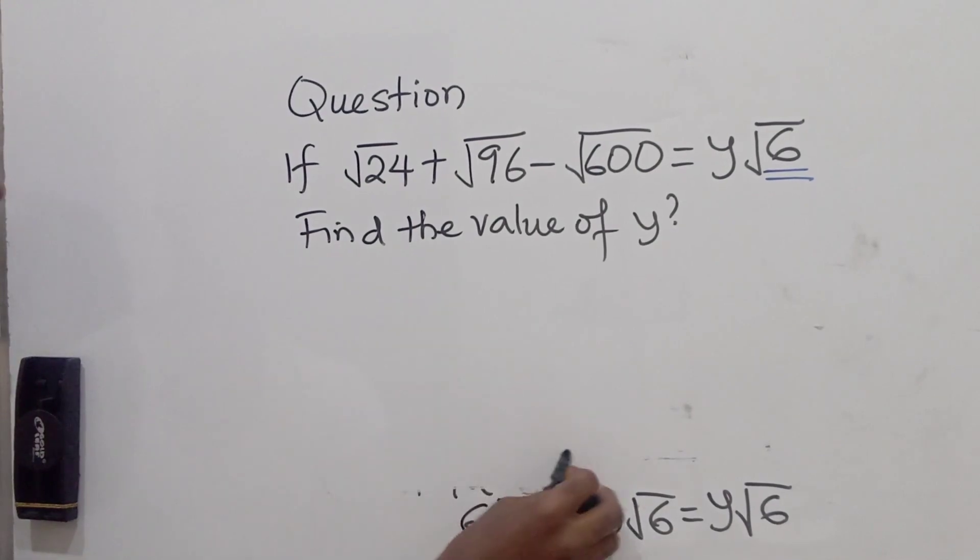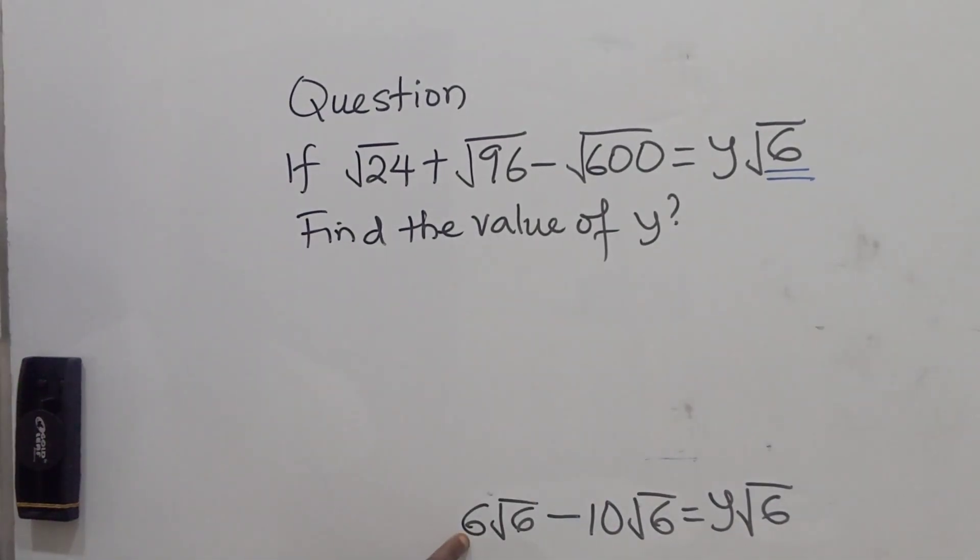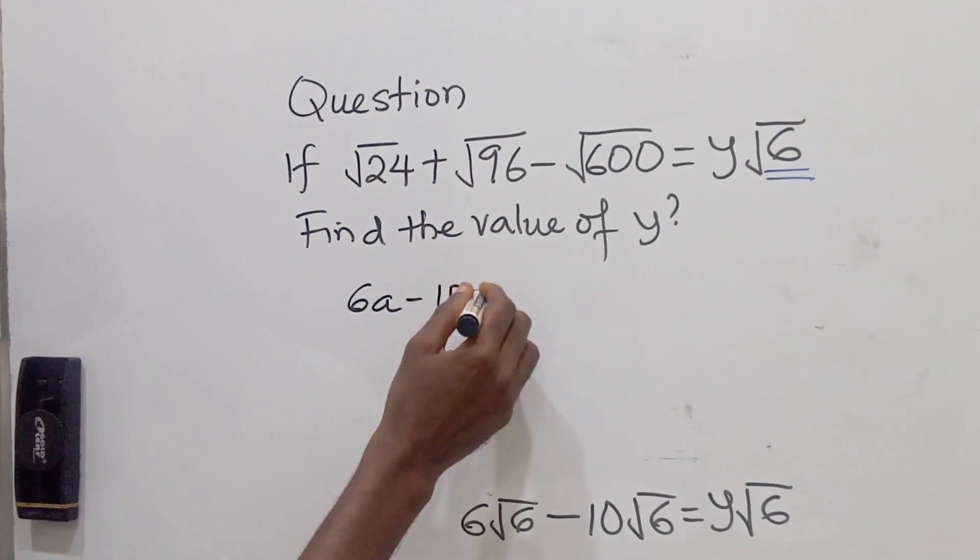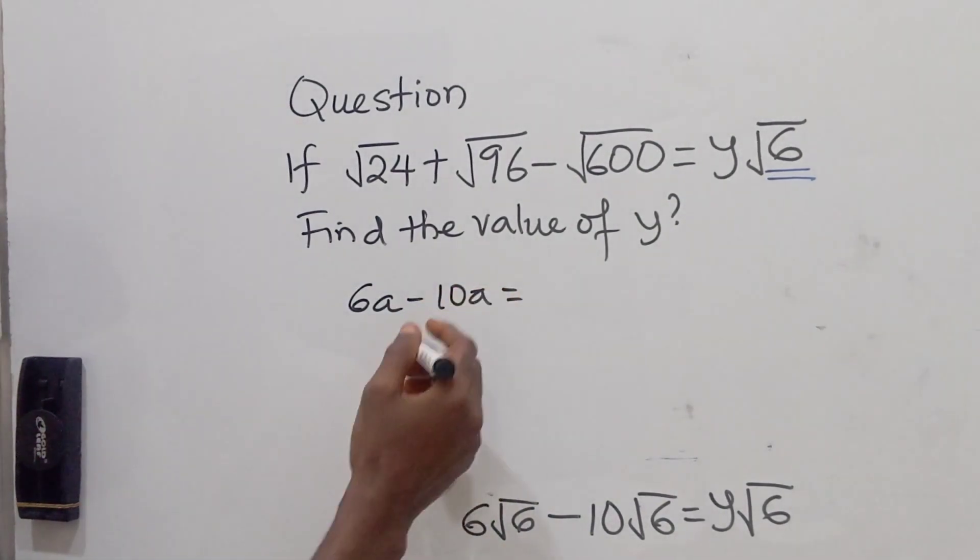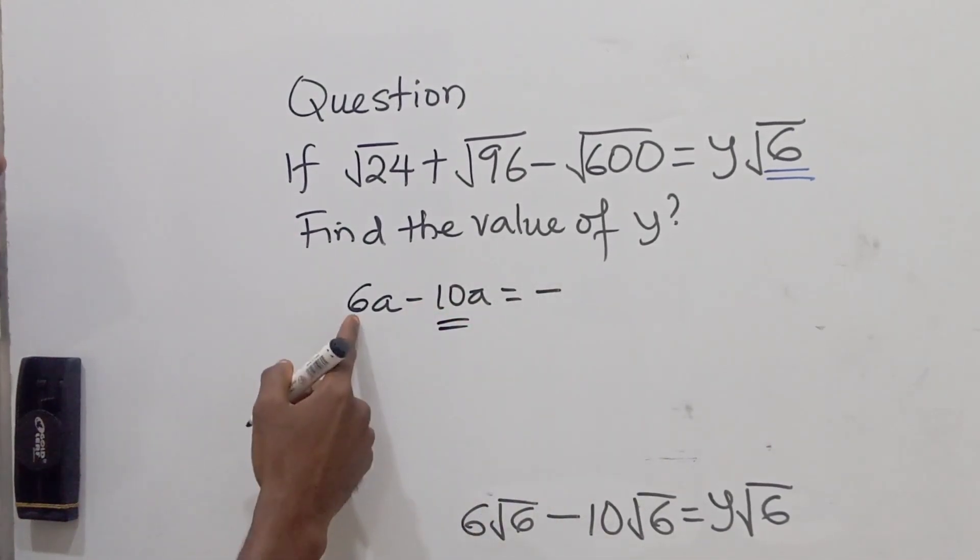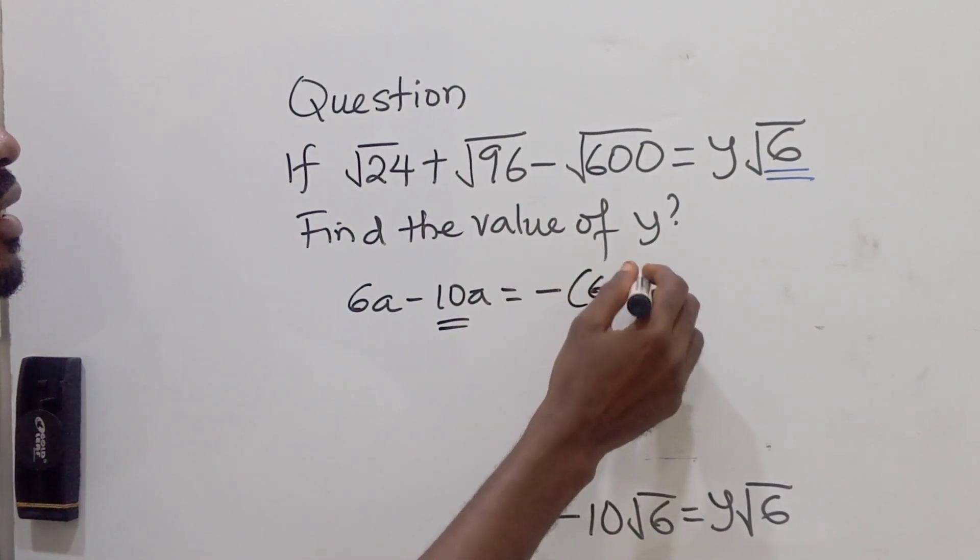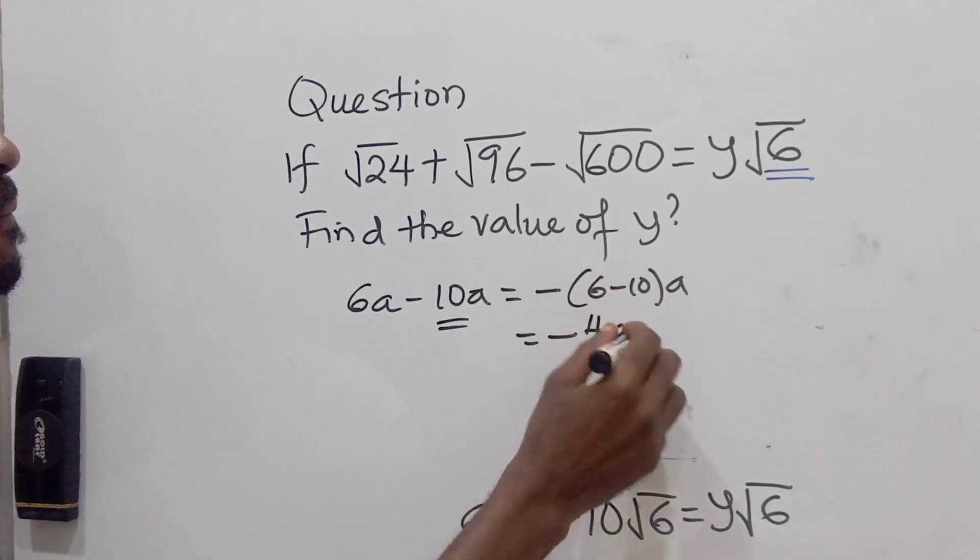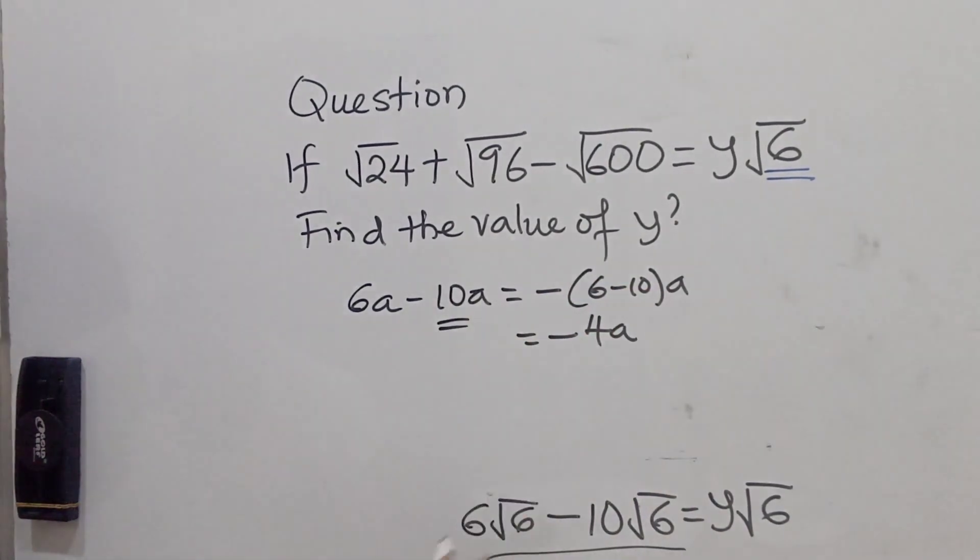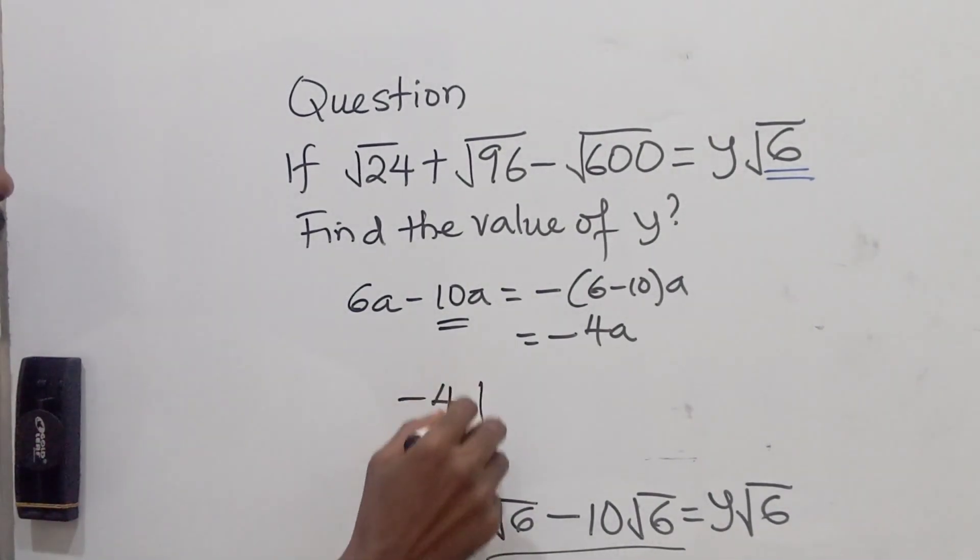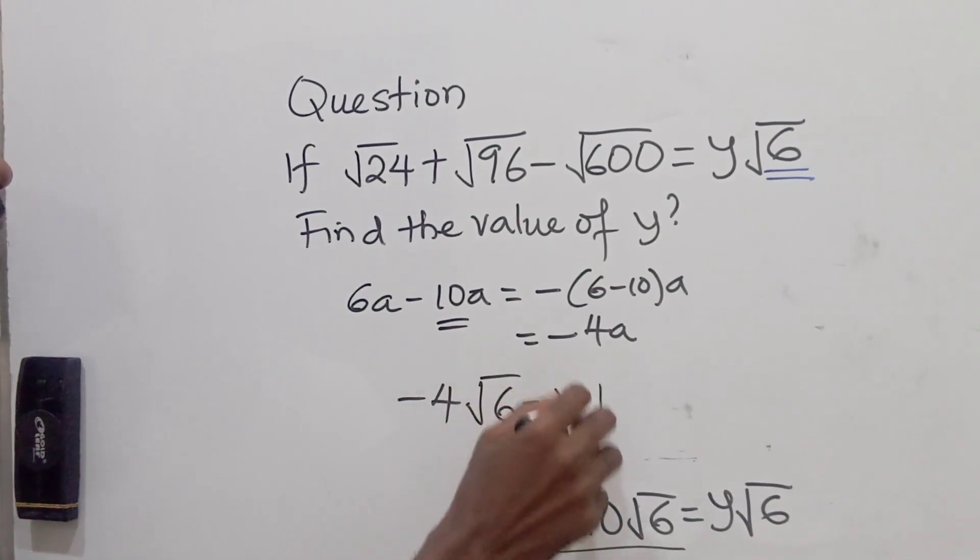6 root 6 minus 10 root 6. We are still going to treat it like algebra. I have 6a minus 10a. Of course, this is negative because this number is greater. So negative. Now, 6 minus 10. So I have 6 minus 10a. So this will give us what? Minus 6 minus 10 is 4a. So if we treat this like this, we are going to get what? Minus 4 root 6 is equal to y root 6.